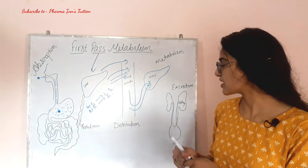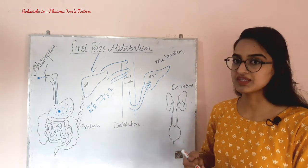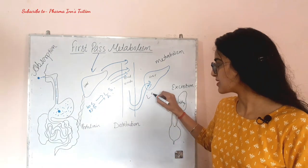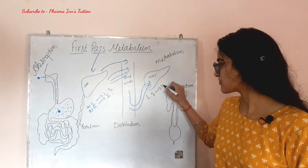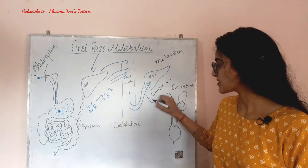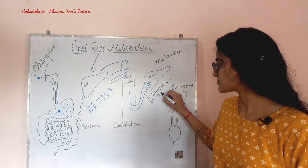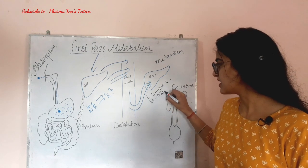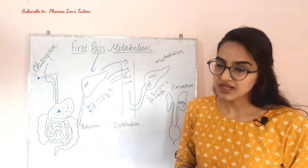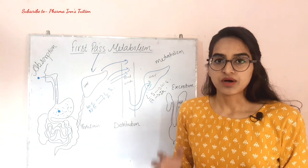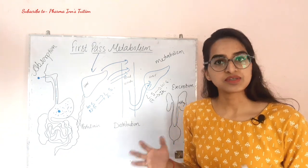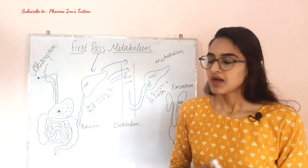So in the liver, through biotransformation, the lipid-soluble drug becomes water-soluble, and the activated drug is inactivated. This allows it to be secreted in our urine and cleared from the body.